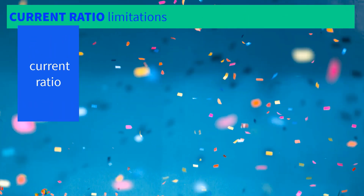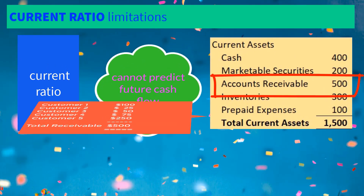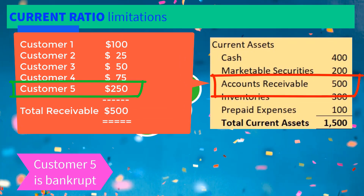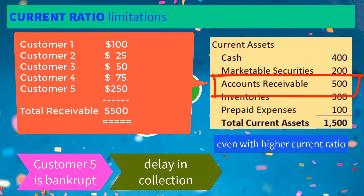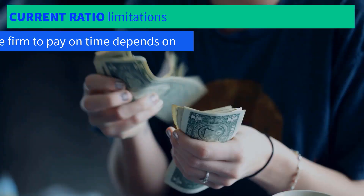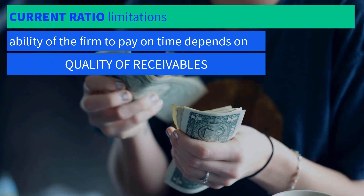The current ratio cannot predict future cash flow. If a significant amount of accounts receivable comes from one customer and that customer files for bankruptcy, there would be a significant delay in collecting the payment. Even if the current ratio is high because of the receivables, the ability of the firm to pay debt will be compromised due to the non-collection of that significant receivable. The ability of a firm to pay on time also depends on the quality of receivables.